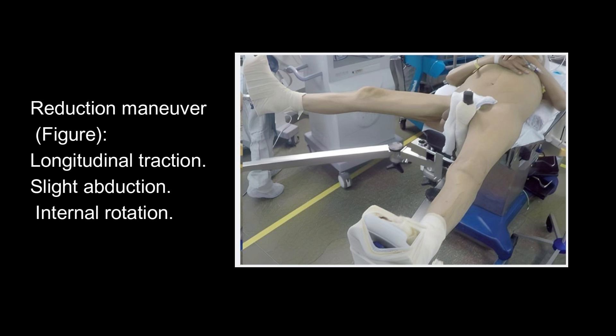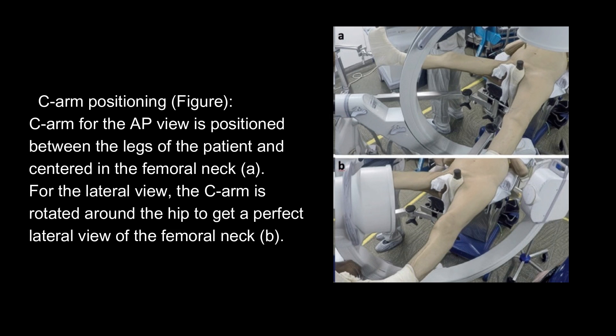Reduction Maneuver: Longitudinal Traction, Slight Abduction, Internal Rotation. C-Arm Positioning: The C-Arm for the AP view is positioned between the legs of the patient and centered on the femoral neck. For the lateral view, the C-Arm is rotated around the hip to get a perfect lateral view of the femoral neck.